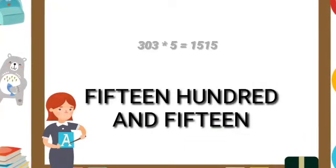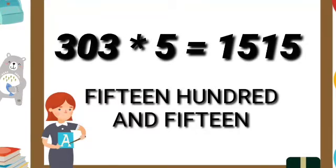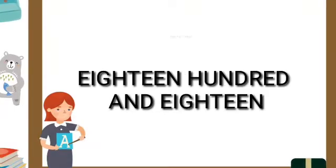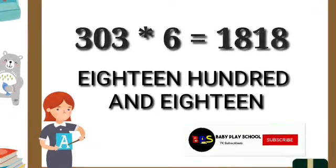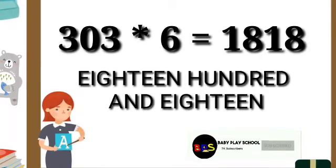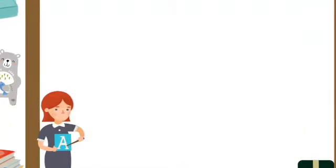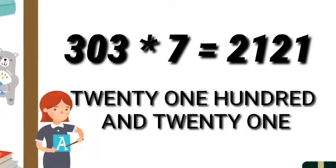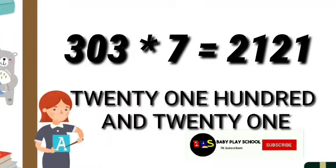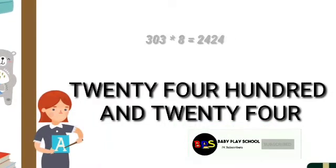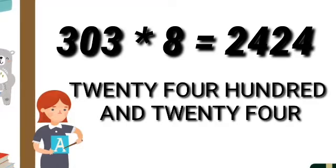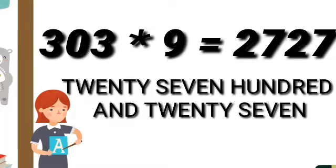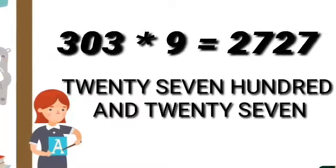303 5s are 1515. 303 6s are 1818. 303 7s are 2121. 303 8s are 2424. 303 9s are 2727.